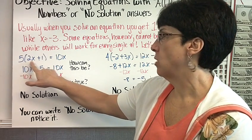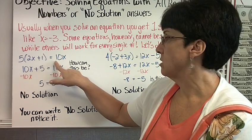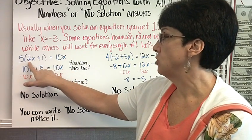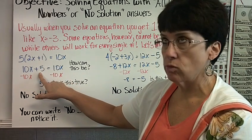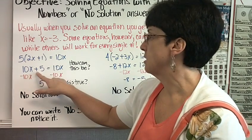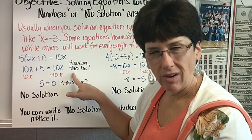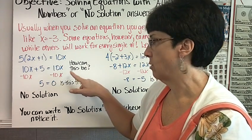Here's our first one. 5 times the quantity of 2x plus 1 equals 10x. Do the distributive property. 5 times 2x is 10x, 5 times 1 is 5. So we have 10x plus 5 equals 10x. Now some of you may think at this point, how can this be? How can you have something plus something equal the same thing?